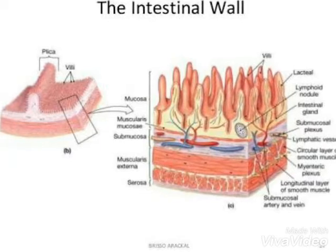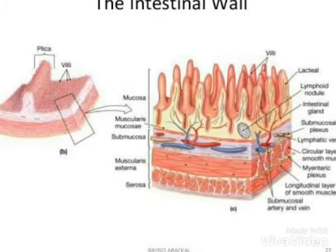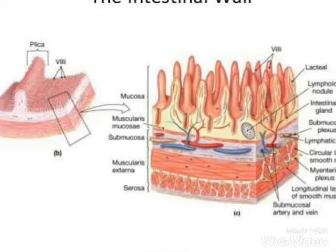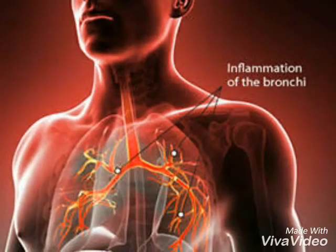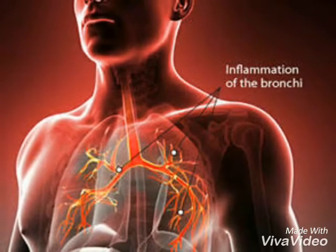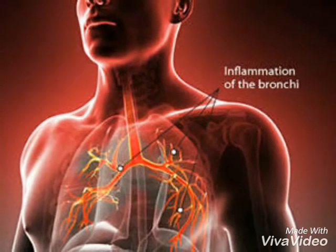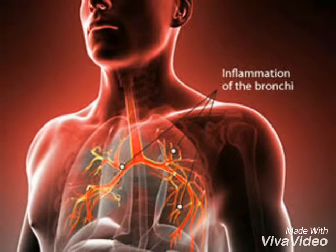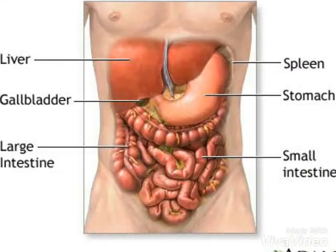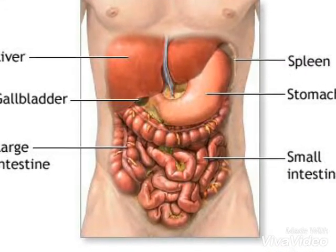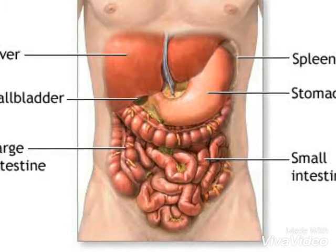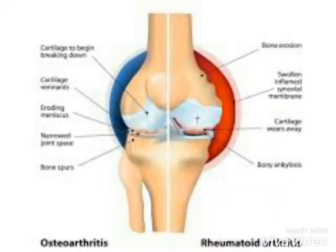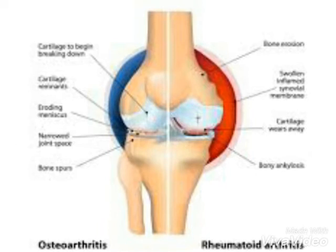Typhoid is that disease in which the bacteria first reaches the intestine, then after it enters the intestinal wall and multiplies inside macrophages in mesenteric lymph nodes. After multiplication, they enter the bloodstream to the liver, gallbladder, spleen, bone marrow, lungs, kidney, etc., for further multiplication.